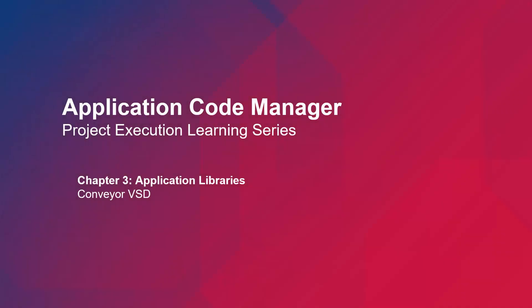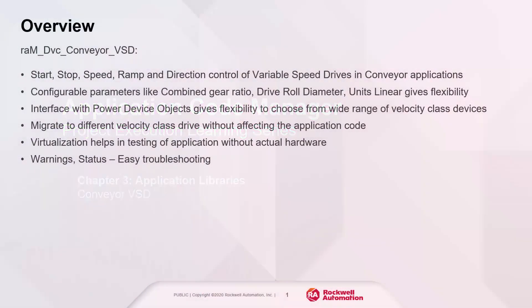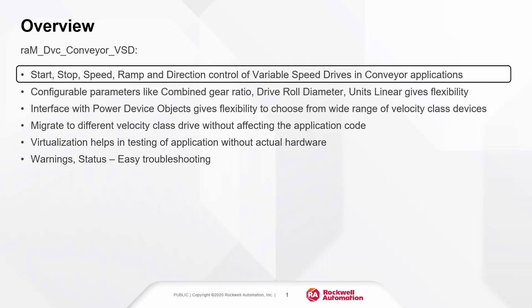In this video, I will be demonstrating the Convair VSD object from Machine Builder libraries. A quick overview about the object: this object is used for start-stop, speed, ramp, and direction control of variable speed drives like PowerFlex 525 and 755 in Convair applications.